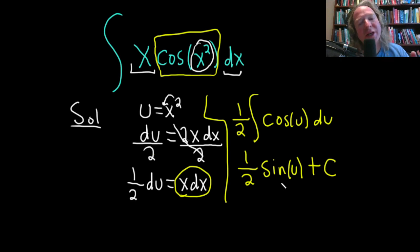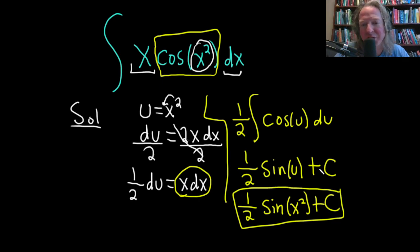And you should always check your answer, right? The derivative of sine is cosine, so all is good. We're not done. We still have to go back to the original variable of integration, which was x. So this is 1 half sine. And then recall that the original variable here is x, so u is x squared. So just put an x squared here, and then we have our plus C, which is our constant of integration.